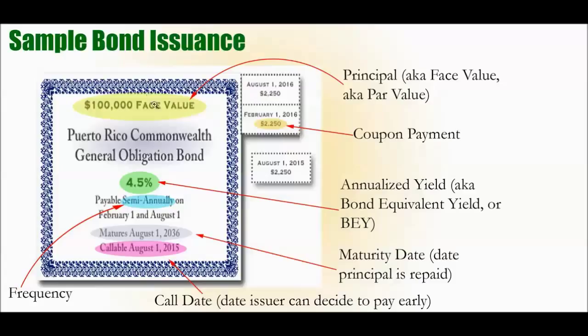First, at the top of the screen, you see the face value. That is basically the loan amount. If you're an investor, you're loaning the Puerto Rican government $100,000. That's how much the Puerto Rican government is asking for, that's how much the bond is worth — the face value. That's what they owe you back at some point.